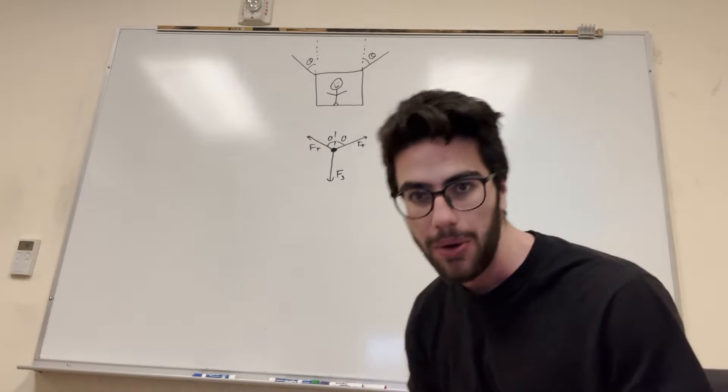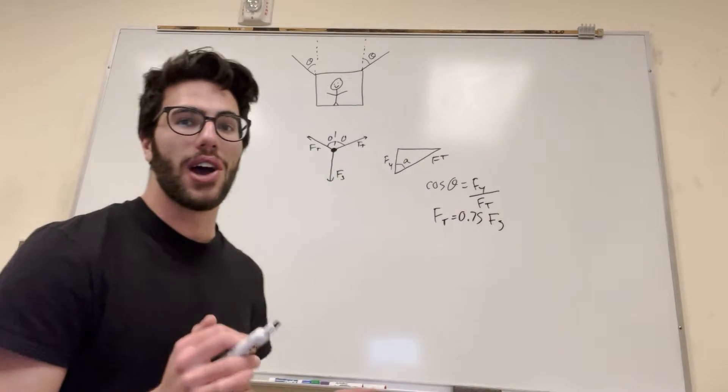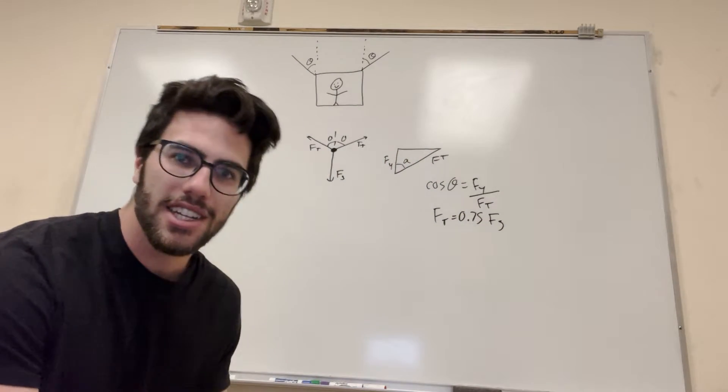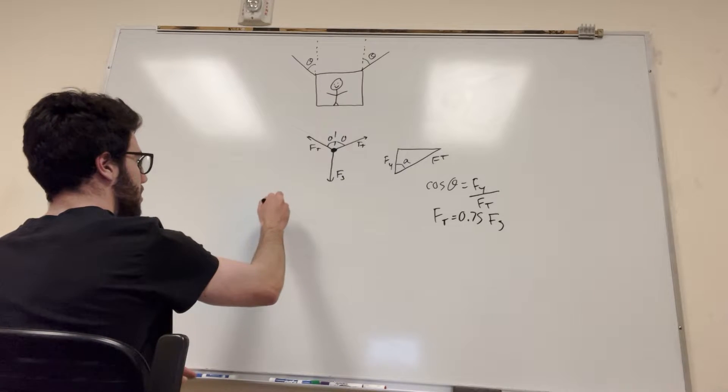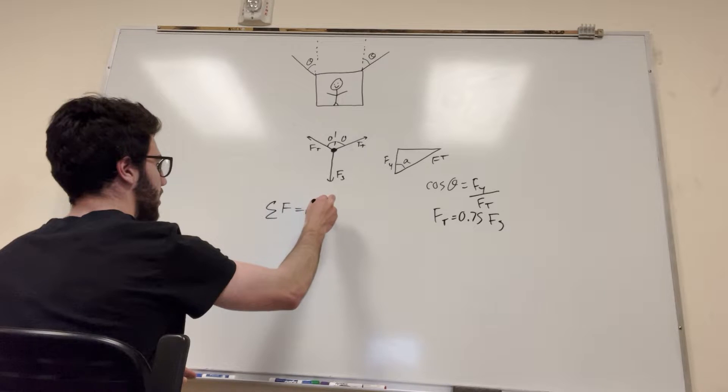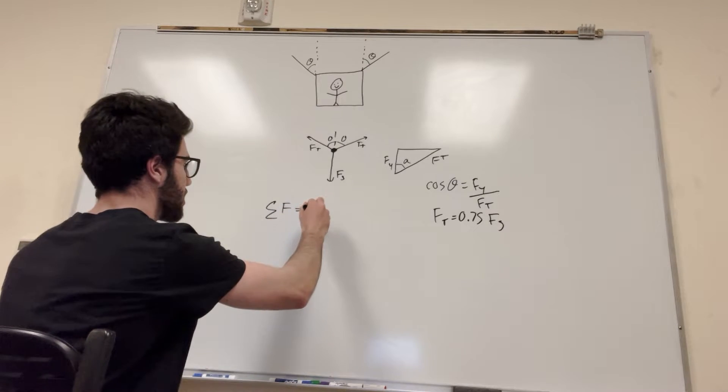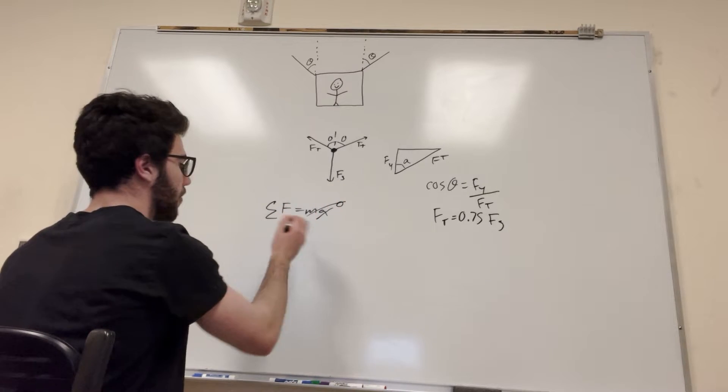Okay. So basically, once you write down everything you know and everything you can figure out, I just like to try to figure something out. So, we know the sum of the forces is equal to mass times acceleration. I already said acceleration is 0, it's a constant. So the sum of the forces is equal to 0.